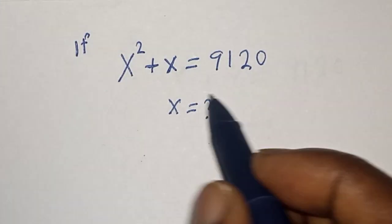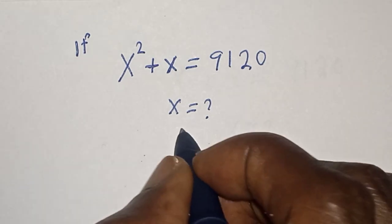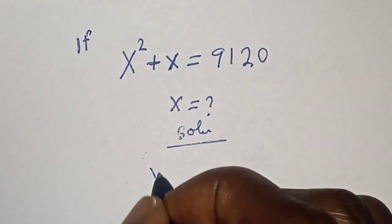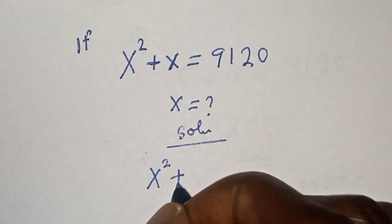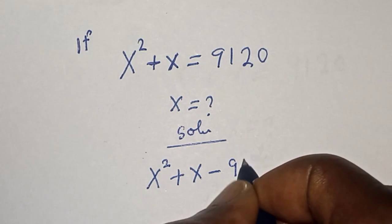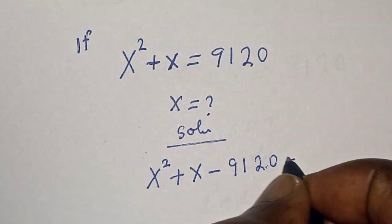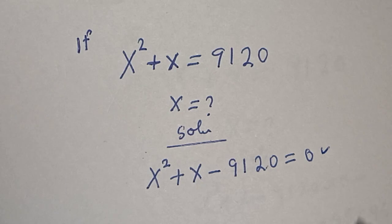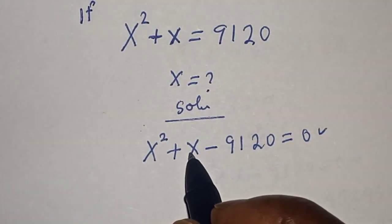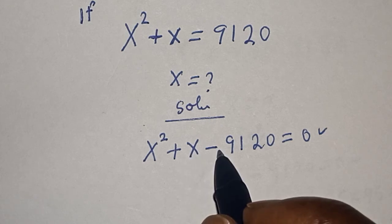Solution: We have x squared plus x minus 9,120 is equal to zero. This is a quadratic equation which can be solved using the factorization method. The coefficient of x squared is 1 and the constant is minus 9,120.